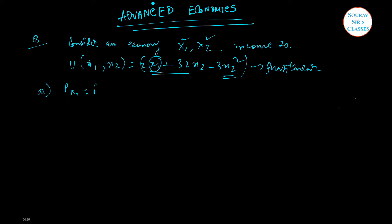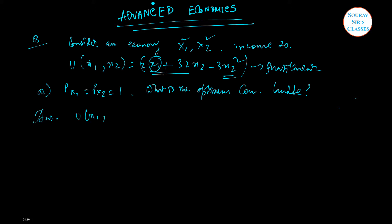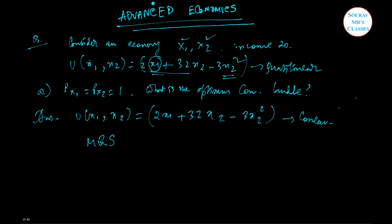The first question: given that the price of x1 and price of x2 are equal and both equal to 1, what is the optimal consumption bundle? Now, this function is quasi-linear. We can find the MRS, and one thing to note is that it is a concave function as well.